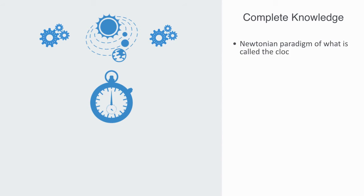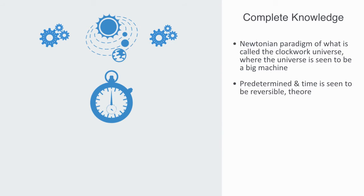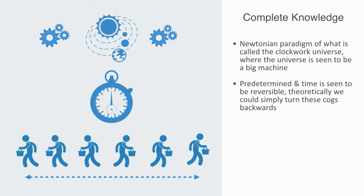The standard model sees the world as fundamentally knowable. This is the Newtonian paradigm, what is called the clockwork universe, where the universe is seen to be a big machine. Like a big clock with all the cogs turning as time moves forwards. The whole thing is predetermined and time is theoretically reversible. Theoretically, we could simply turn all these cogs backwards. Thus, the future and the past are determined and because of that, they are knowable.